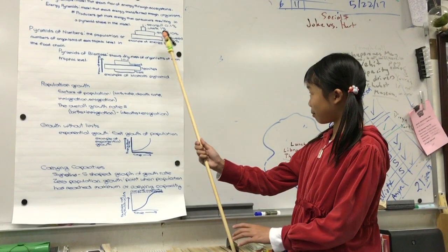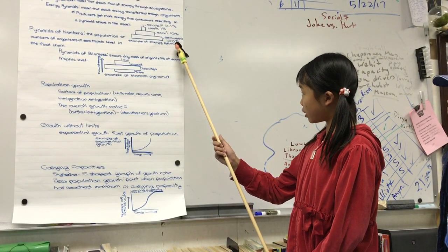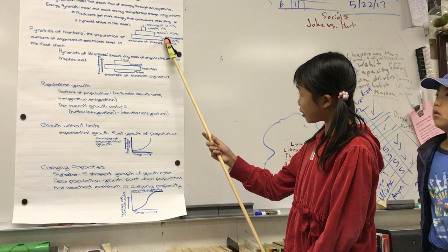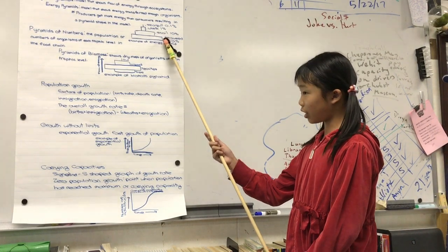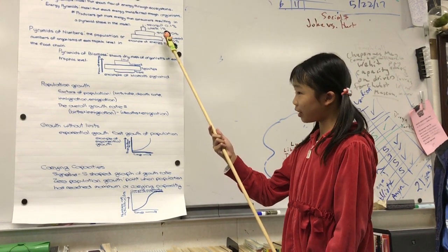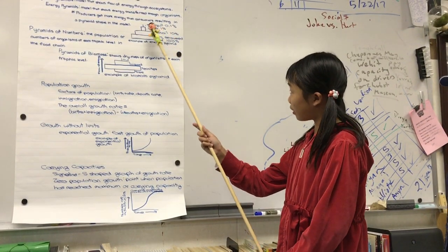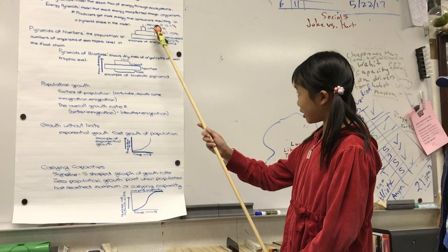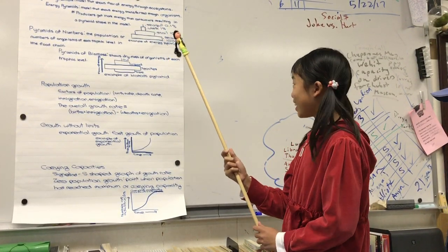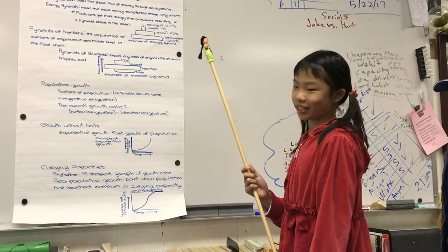For here, in the model, seaweed has 100% of energy, and then about 10% is passed on to the snails. They have 10% of energy, and the other 90% of energy is passed on to the environment as either heat or waste. The log has one percent, and then at the end, the seagull has one tenth percent because it's at the top of the example of the energy pyramid.